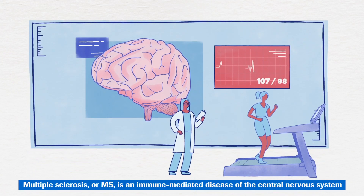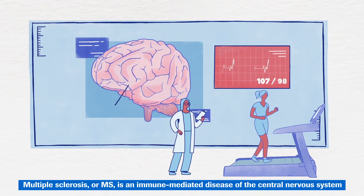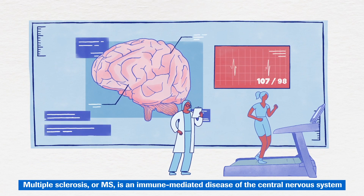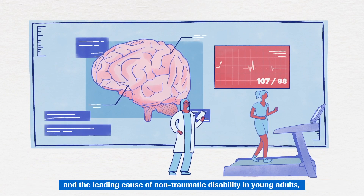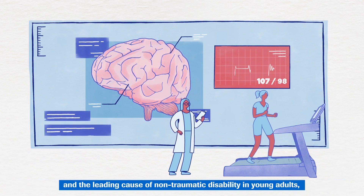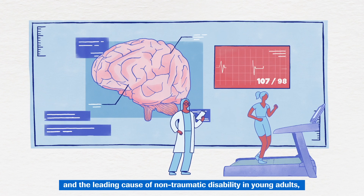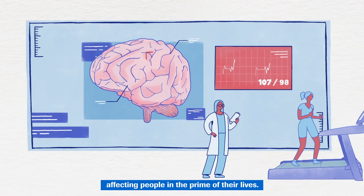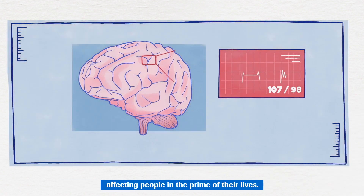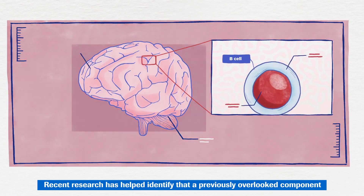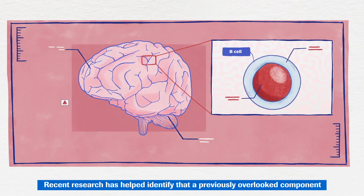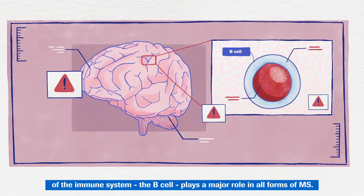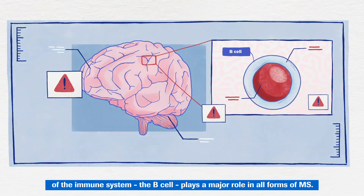Multiple Sclerosis, or MS, is an immune-mediated disease of the central nervous system and the leading cause of non-traumatic disability in young adults, affecting people in the prime of their lives. Recent research has helped identify that a previously overlooked component of the immune system, the B-cell, plays a major role in all forms of MS.